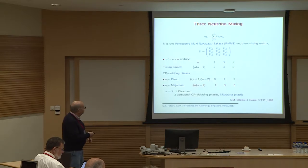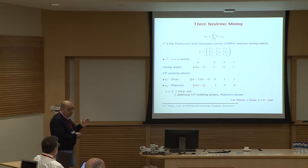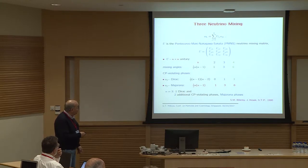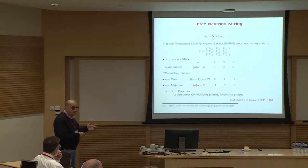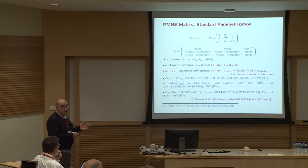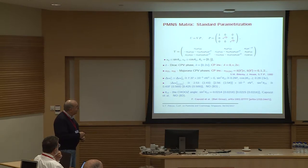In this scheme, the Pontecorvo-Maki-Nakagawa-Sakata neutrino mixing matrix is a three-by-three unitary matrix, parametrized with three mixing angles. Depending on whether the massive neutrinos are Dirac or Majorana particles, it also contains one Dirac or one Dirac and two Majorana CP-violating phases. In the case of massive Majorana neutrinos, we can have more CP violation in the neutrino mixing matrix.